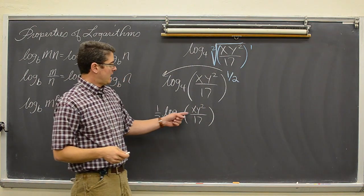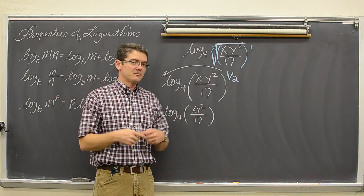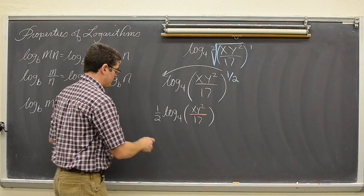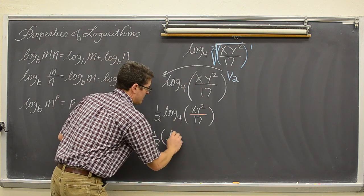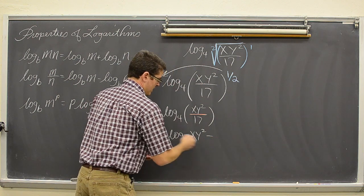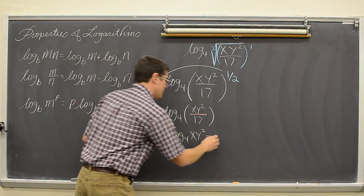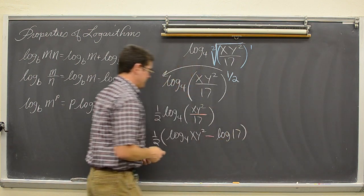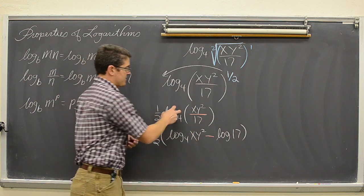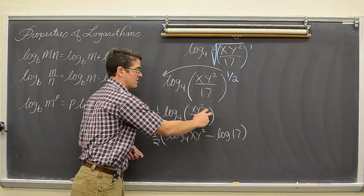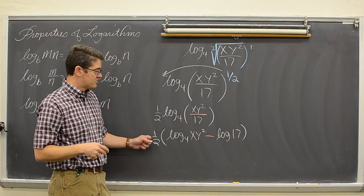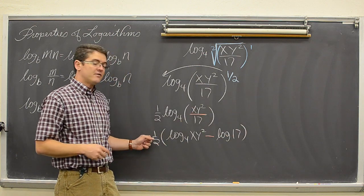Now we can start to expand this fraction. Like in the last video, we deal with the division sign first. So we are going to do one half times log base four of x y squared minus, for the division symbol, log of 17. Now why did I wrap this inside parentheses and put the one half out front? Because it is one half of this entire expression, which right now is just one term. But as we expand it to more terms, that one half is going to have to be distributed to all of those terms, so you do need these parentheses.